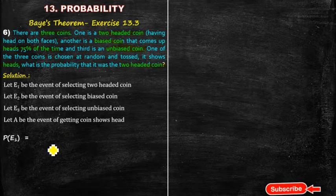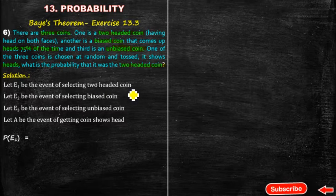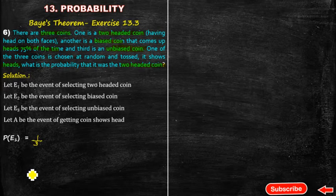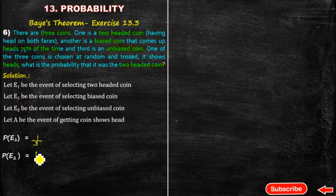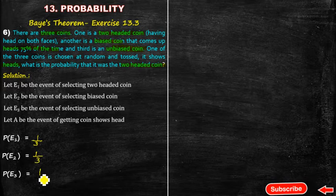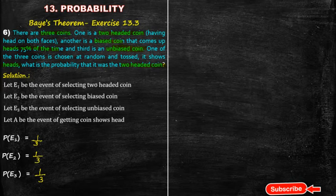The probability of E1: out of 3 coins, I select one coin, so P(E1) = 1/3. Similarly, P(E2) = 1/3, since there is one biased coin out of 3 coins. And P(E3) = 1/3, since there is one unbiased coin out of 3 coins.